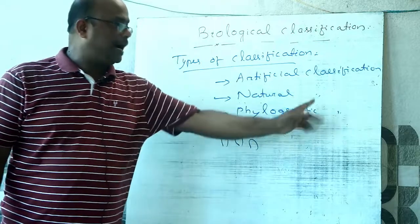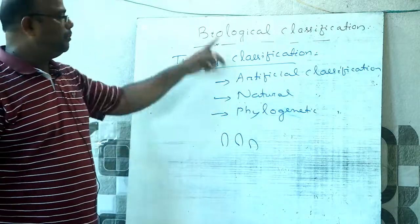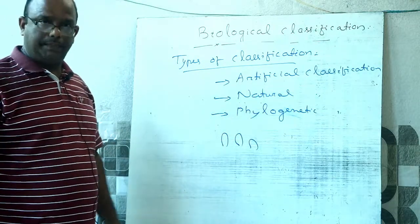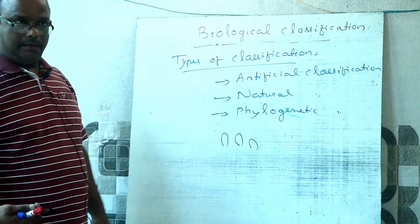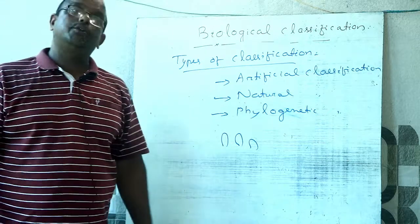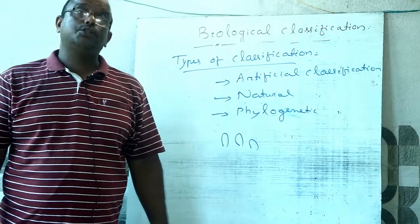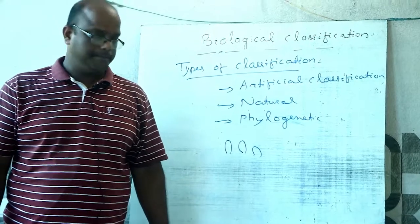This is phylogenetic classification, where organisms are grouped based on evolutionary trends. It is about the types of classification. In my next class, I will discuss the units of classification or taxonomic categories. That's all.